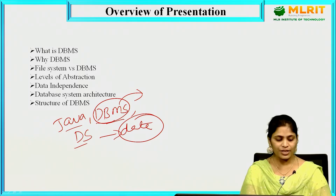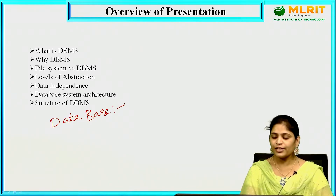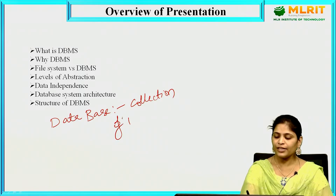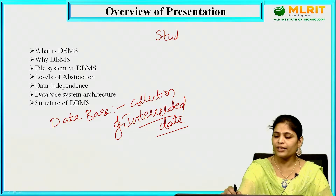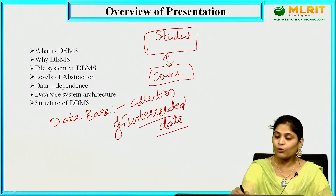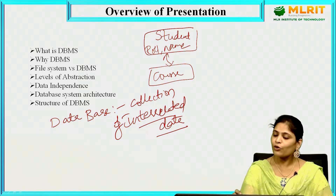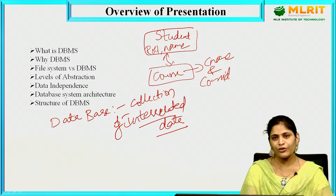Now we have discussed what is data and what is information. Let us discuss what is database. A database is nothing but a collection of interrelated data. For example, we have student data and course data — these are interrelated with each other because student data contains roll number and name, and course data contains course name and course ID. Students enrolled in courses, which is what the interrelation means.